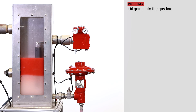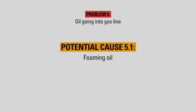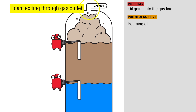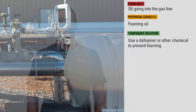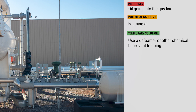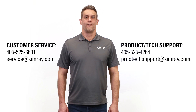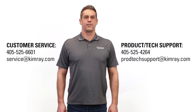If the oil level in your vessel seems to be maintaining at the desired level within the sight glass range, but somehow oil is making it into the gas outlet line in the vessel, you may have an issue of foaming oil. Foaming oil is not dense enough for the displacer to sense its level inside the vessel. The displacer senses the actual liquid oil level, so if the foam continues to rise, it could eventually exit the vessel through the gas outlet line. You typically won't see an indication of foaming oil in the sight glass because it's only happening inside the vessel. Defoamers or other chemicals can be used to help prevent foaming, but are just temporary solutions. The cause for the foaming could be that there are contaminants in the oil flow stream. For further help, contact the experts at your local Kimray store or authorized distributor.